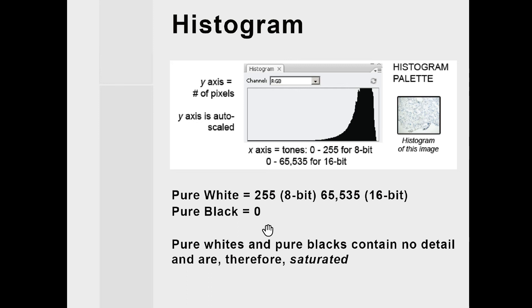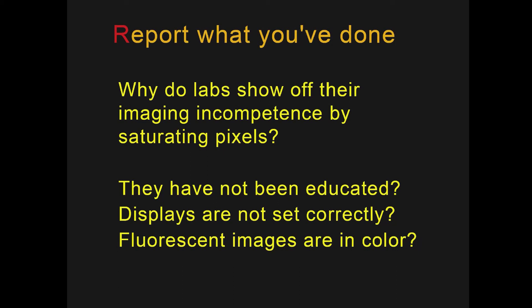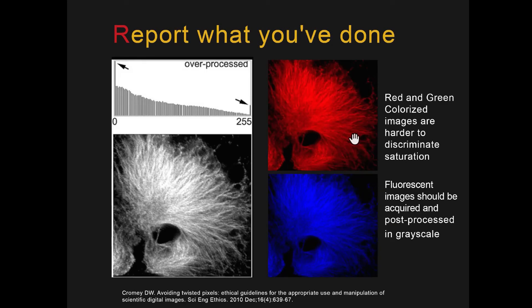Pure whites and blacks contain no detail, and are therefore saturated. You have to wonder why labs show off their imaging incompetence by saturating pixels. There are three reasons: maybe they haven't been educated, maybe displays are not set correctly, or because fluorescent images are often in color, it's harder to see when you've saturated pixels in two different colors like red and blue. Therefore, it's really important to always look at your images from a confocal in grayscale, so you can better see whether pixels are under or over-saturated. Note also that the blacks here are perfectly black, so you've lost all detail in the blacks.